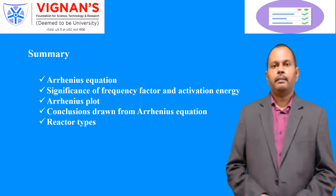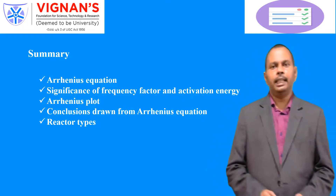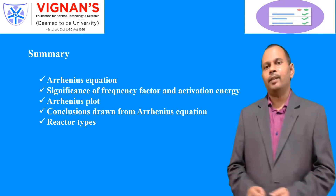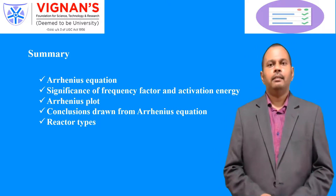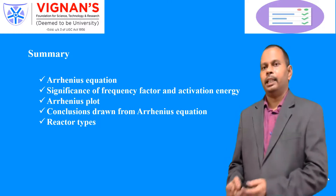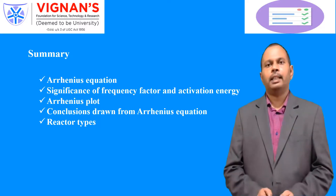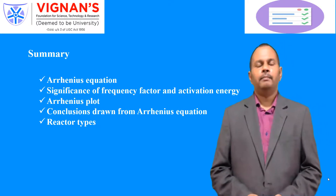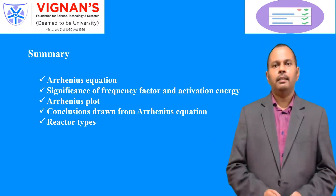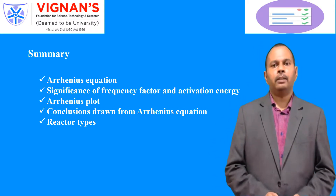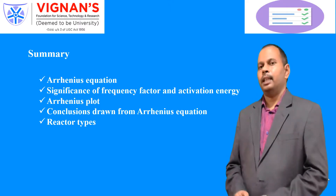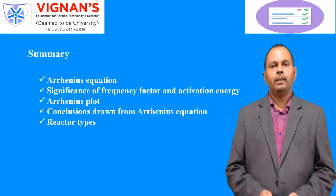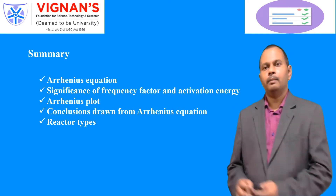Reactor types summary: there are mainly three types of reactors — batch reactor, plug flow reactor, and mixed flow reactor. In the batch reactor, concentration changes with respect to time, but at any particular time concentration is uniform throughout the reactor. In the PFR, concentration changes with respect to length but does not vary with respect to time. In the mixed flow reactor, concentration does not vary with respect to time or position. Thank you.